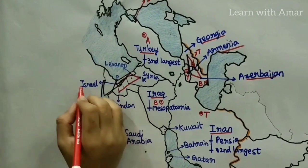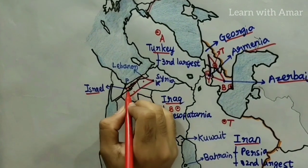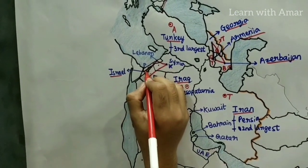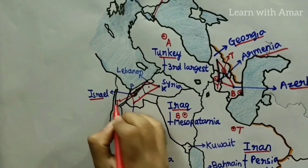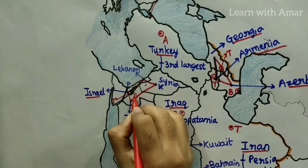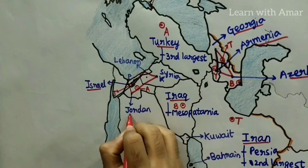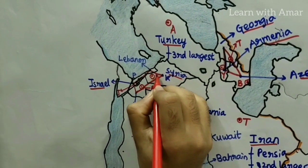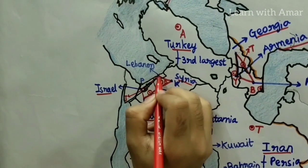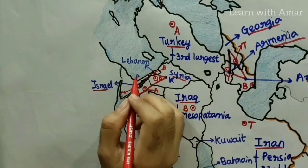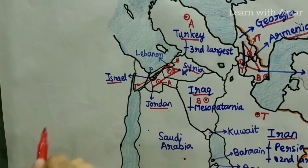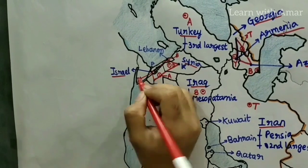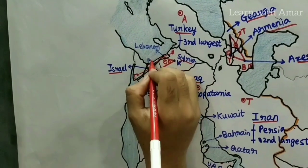Then we come to the quadrilateral. Israel considers its capital city to be Jerusalem. Jordan's capital city is Amman. Syria's capital city is Damascus. Lebanon's capital city is Beirut. Palestine's capital city is considered to be Jerusalem, but its administrative center is located in Ramallah.